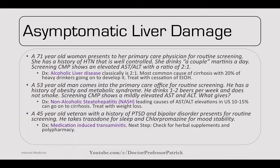A 53-year-old man with obesity and metabolic syndrome drinks only 1-2 beers per week. Screening CMP shows mild AST and ALT elevation. This is non-alcoholic steatohepatitis (NASH) — the leading cause of AST and ALT elevations in the US. Fifteen percent can go on to develop cirrhosis; treat with weight loss if possible.